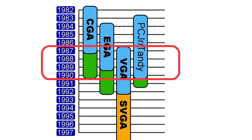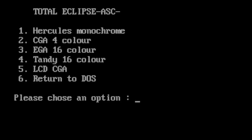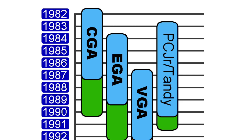During this period it was not uncommon for a new game to support all four standards. EGA was backwards compatible with CGA, and VGA was backwards compatible with EGA and thus by default CGA as well. The Tandy graphics was only backwards compatible with CGA.